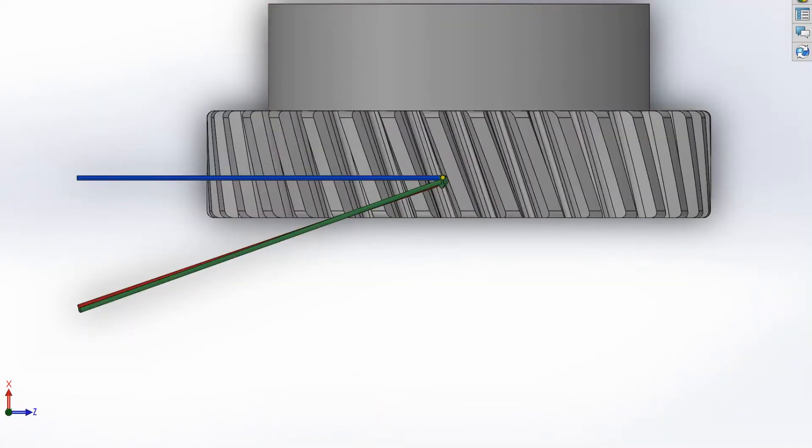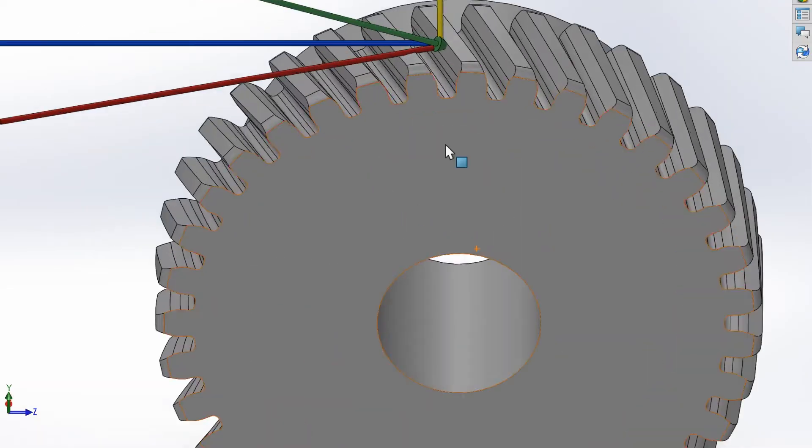Looking at the gear from the top shows us that both the full vector in green and the red vector we started with are perpendicular to the angle of the teeth, or the helix angle, and by looking at it from the side.